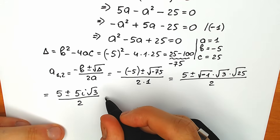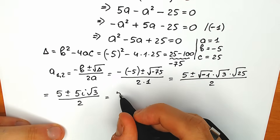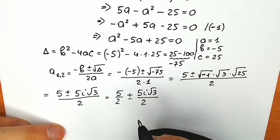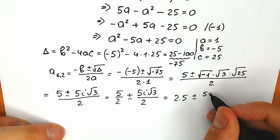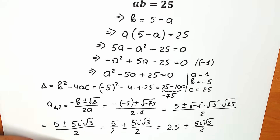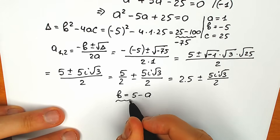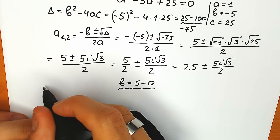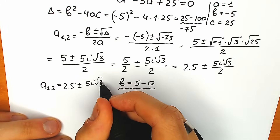There's a really important trick: we can divide by parts. So we have 5/2 plus or minus 5i√3 over 2. A lot of people do that to separate the real part and imaginary part. So 5/2 can be written as 2.5. So a₁ and a₂ equal to 2.5 plus or minus 5i√3 over 2.